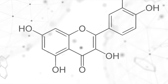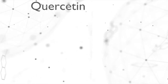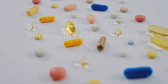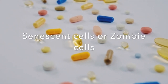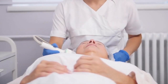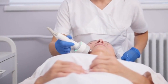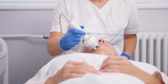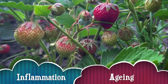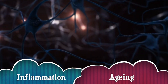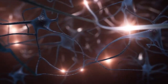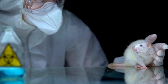Senolytic drugs are compounds designed to target and destroy senescent cells. Senescent cells are old, damaged cells that stop dividing but don't die. These cells release harmful molecules that cause chronic inflammation, tissue damage, and aging-related diseases like cancer, Alzheimer's, and cardiovascular diseases.